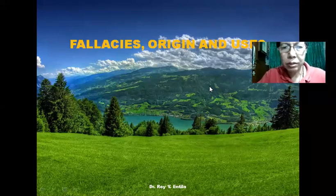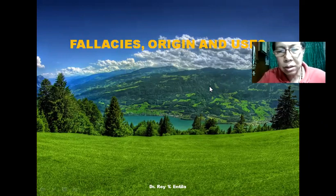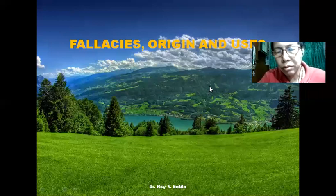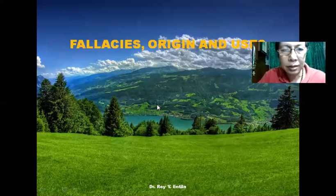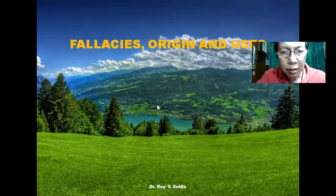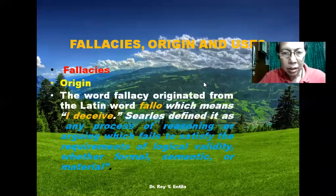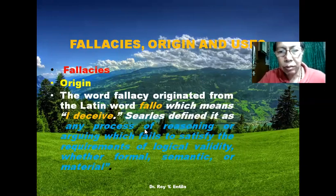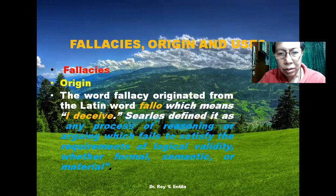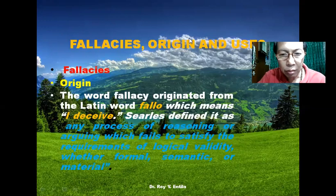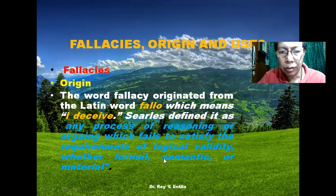Good afternoon, ladies and gentlemen. Today we shall discuss Module 6 on the fallacies: their origin, uses, and the different kinds of fallacies — whether semantic or material. The word fallacy originated from the Latin word 'fallio,' which means 'I deceive.' Searles defined it as any process of reasoning or arguing which fails to satisfy the requirements of logical validity, whether formal, semantic, or material.